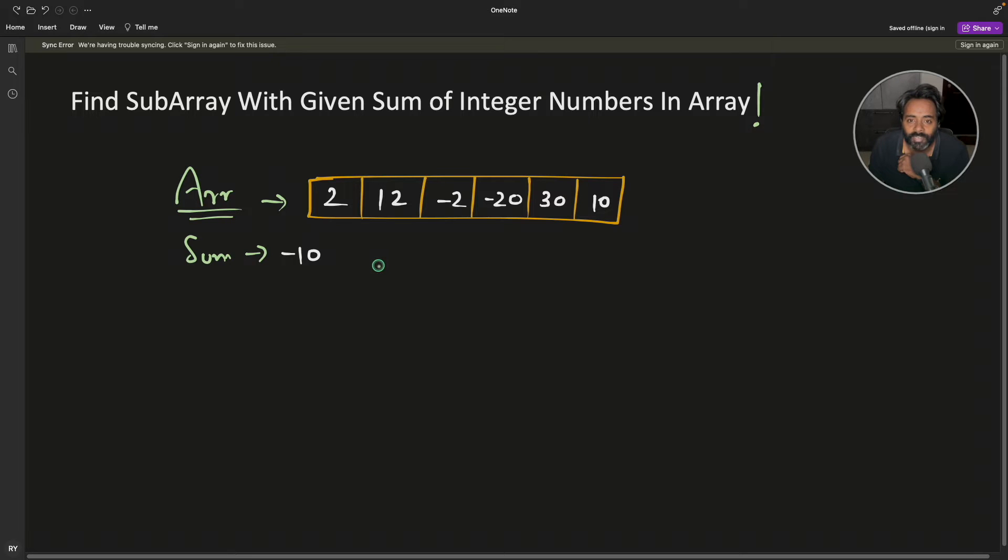Hello friend, this is Rupesh and you are watching CVV Nerds video series on array interview question series. This is a similar question but with negative numbers: find the subarray with given sum of integer numbers in array.